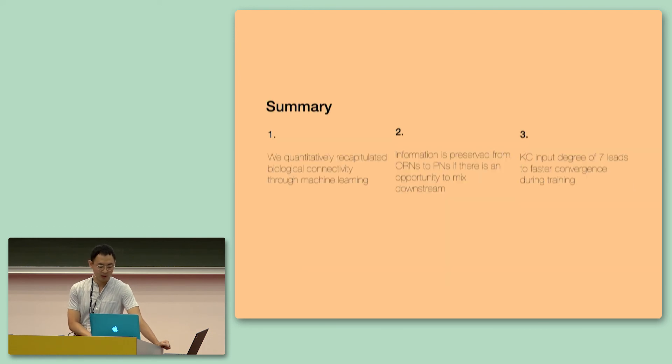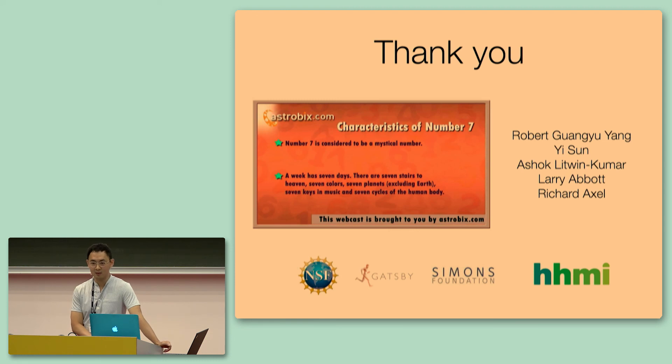So, in summary, we have quantitatively recapitulated biological connectivity through machine learning. And moreover, information is preserved from ORNs to the PNs in our task if there is an opportunity to mix downstream. And finally, we believe that the canyon cell input degree of 7 leads to faster convergence during training. Thank you all for coming, and thank you to all our collaborators and especially Robert here.